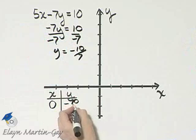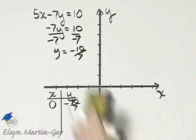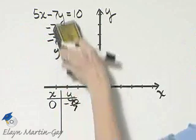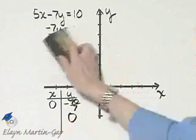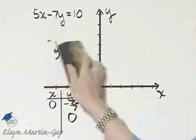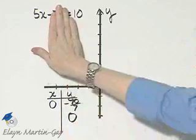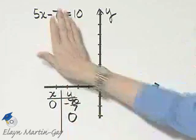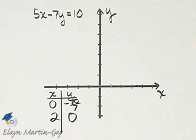Let's find the x-intercept by letting y be zero. Let's see if we can do that one mentally. If I let y be zero, this term is gone. Divide both sides by 5 and x is 2. And then one more ordered pair solution.